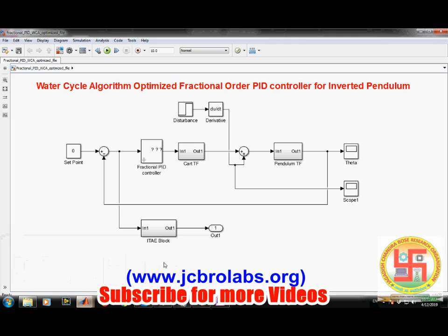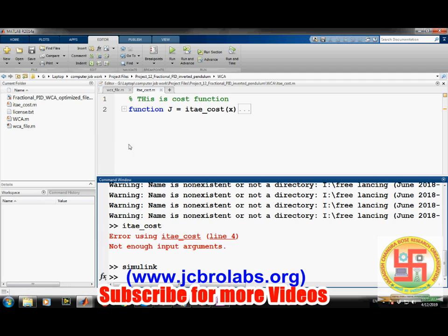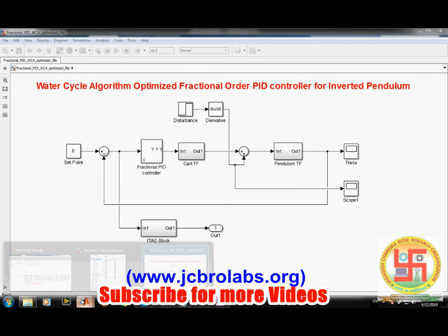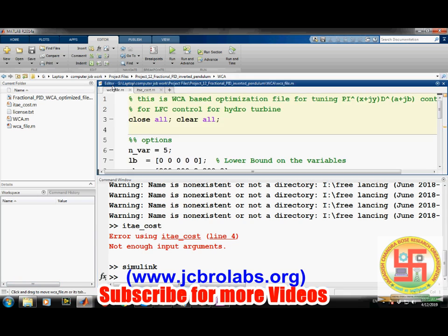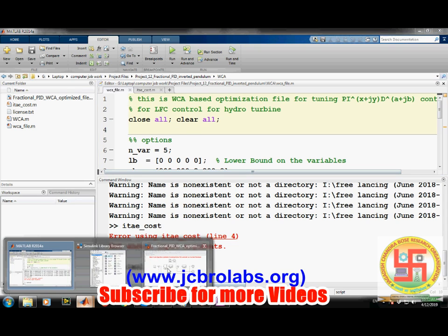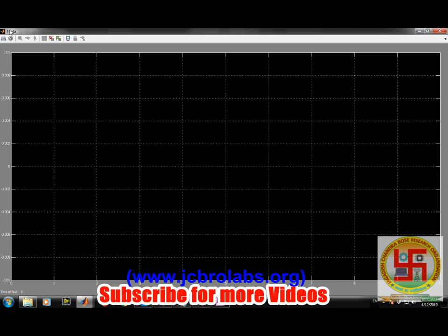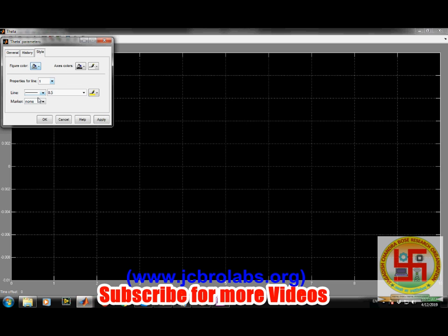Let's demonstrate the video further. This is the model which we have created. Here we have cart transfer function, this is pendulum transfer function, this is the ITAE block. The parameters are not shown here because it is a demonstrative video. Then we have written an ITAE cost function in MATLAB which is calculating the ITAE. This cost function runs this model and from here it calculates the ITAE, and then that value goes back into the cost function. There is a WCA file which is used to optimize all these parameters. You just have to run this file and it will start optimizing itself.